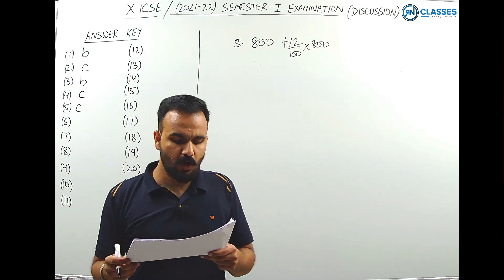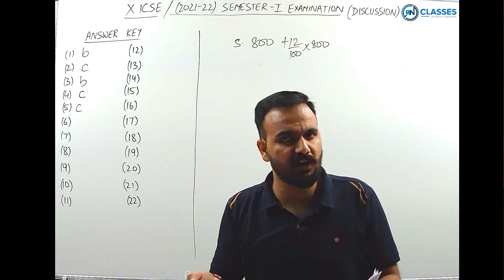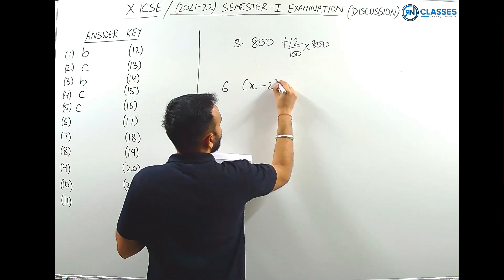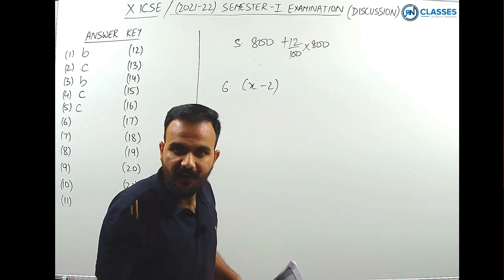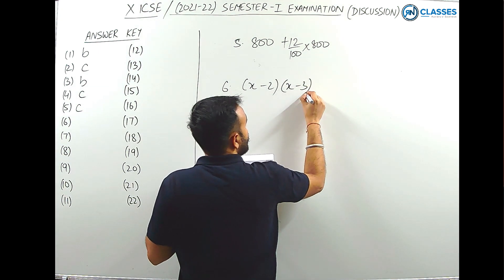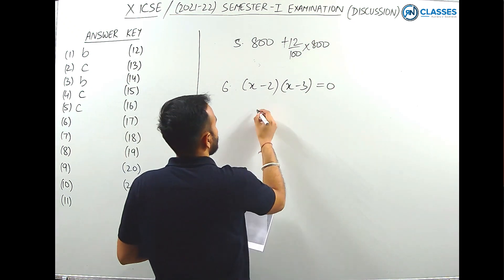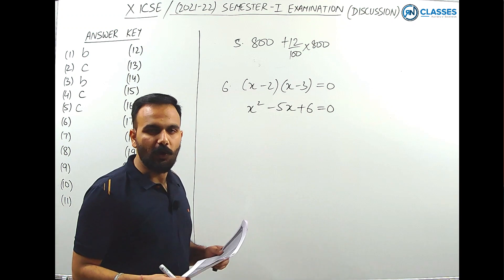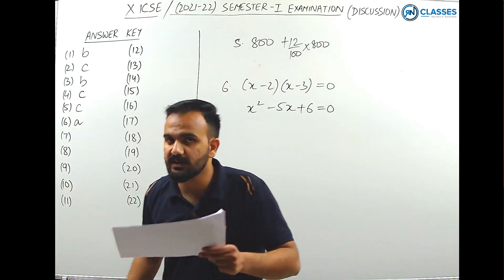Question 6: which quadratic equation has 2 and 3 as its roots? If 2 is a root, then (x-2) is a factor; if 3 is a root, then (x-3) is a factor. So the equation is (x-2)(x-3) = 0, which simplifies to x² - 5x + 6 = 0. This is given in option A, so option A is the answer.